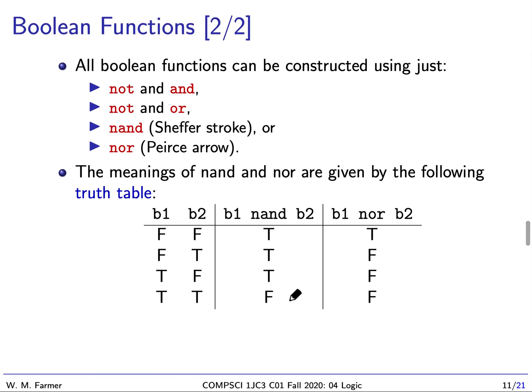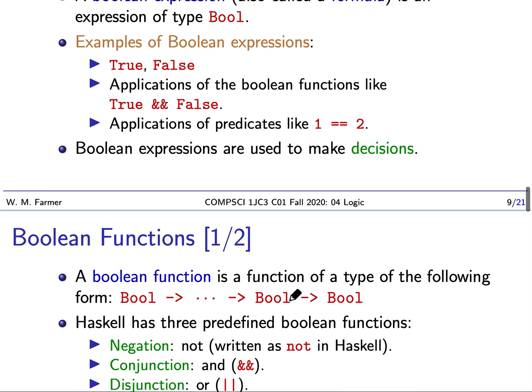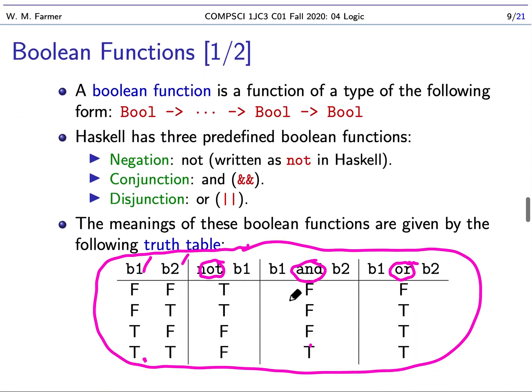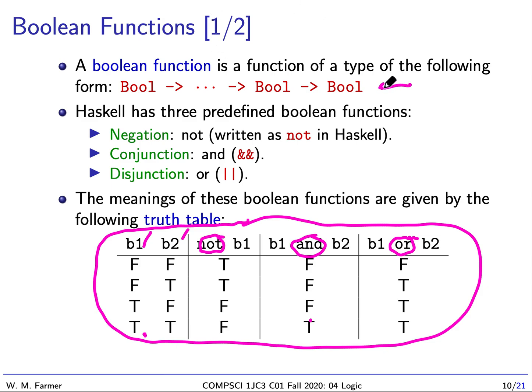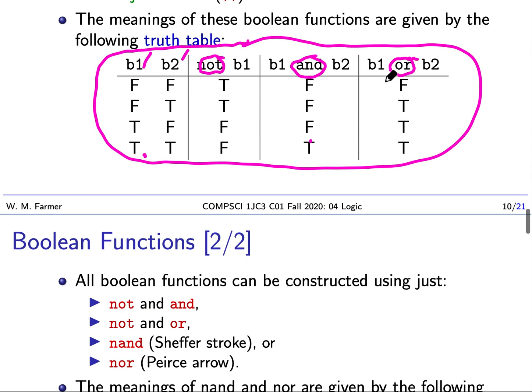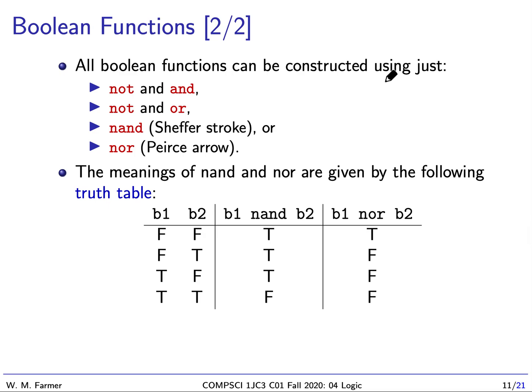There are many, many kinds of Boolean functions — in fact, infinitely many. They can take any number of arguments and can be very complex. But we can represent any Boolean function using just NOT and AND, or NOT and OR, or just a Boolean function called NAND, or a Boolean function called NOR.